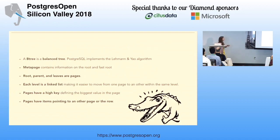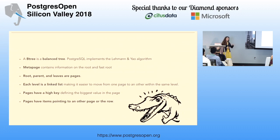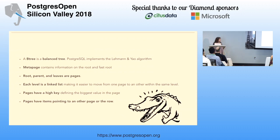To summarize the B-tree data structure: a B-tree is a balanced tree. The first page is a meta page pointing to the root. The root, parents, and leaves are all pages, and each level is a linked list. The high key defines the biggest value in the page, and items are tuples with a value and a pointer — the pointer being either to the child page or to the row in your table.